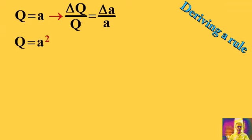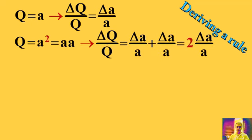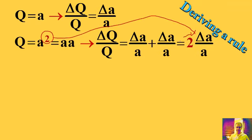If I write q is equal to a to the power of 2, I can write a squared is equal to a times a. And so delta q over q is delta a over a plus delta a over a, so this is 2 times delta a over a. It seems that the exponent here comes as a multiplier.